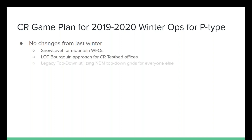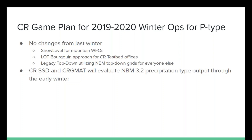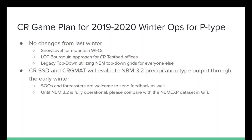We'll keep the current approach for alternate forecast offices. For testbed offices, the approach will be the NBM top-down for everyone else at Central Region SSD. Central Region GMAT will evaluate the NBM 3.2 precipitation type outcomes through early winter. I've already looked at one case from a couple of weeks ago and also going back to last spring — it certainly creates smoother-looking fields because of how it statistically handles the distribution. I encourage you to also look at the 3.2 precipitation type outcome in the MBM EXP database in GFE, compared to what you're getting in your p-type forecast.